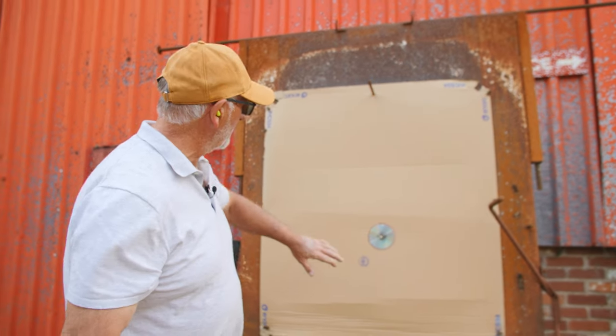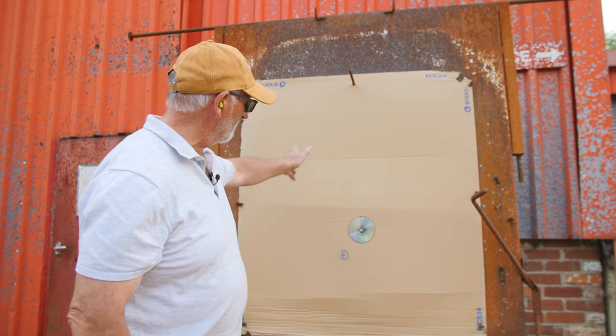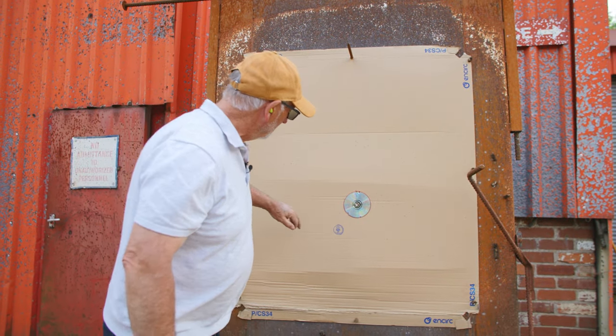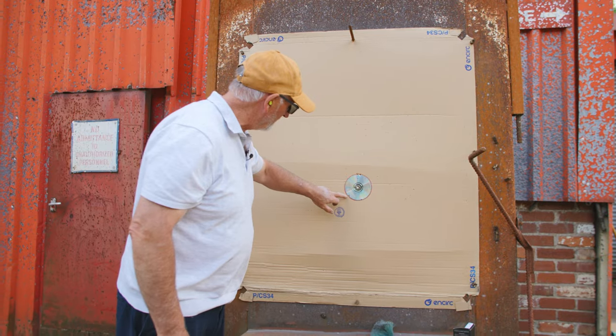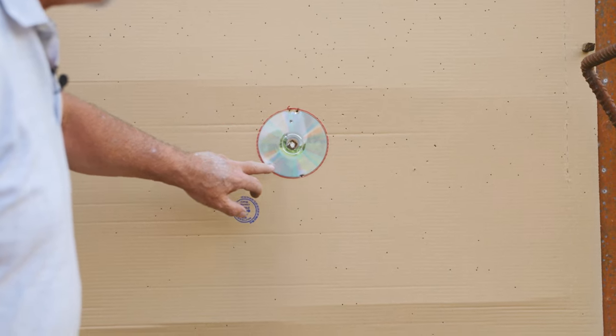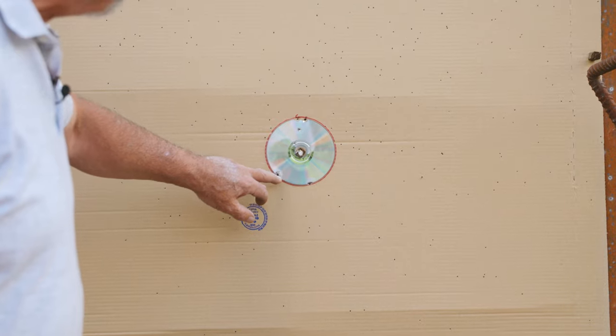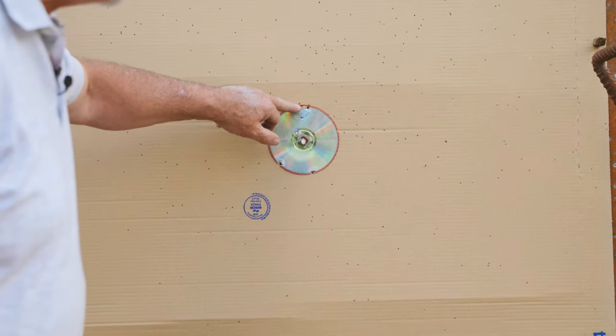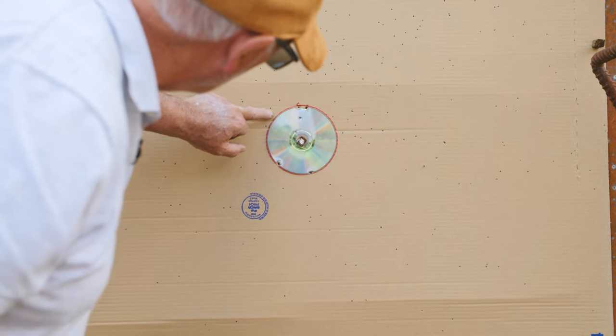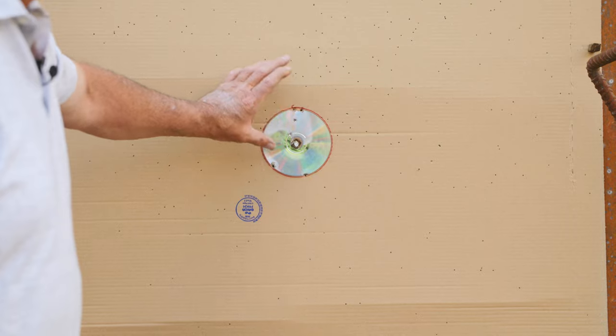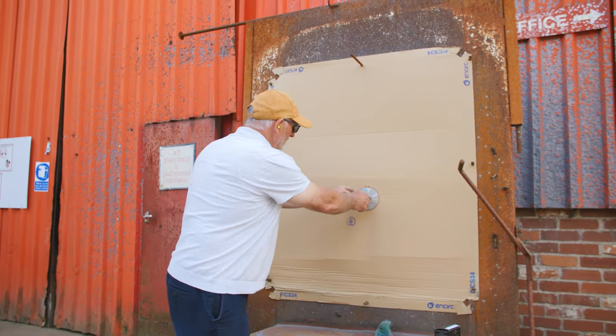I've got a more centralized pattern here, so my aim point was good. Maybe a touch high, and if you look at the actual disc, it's done exactly what I thought it would do. It's gone straight through the disc, but six on the actual disc, two or three on the edges.